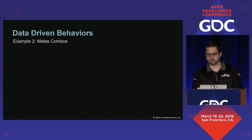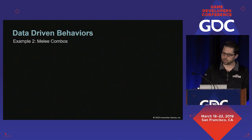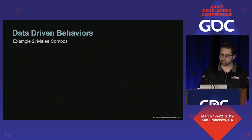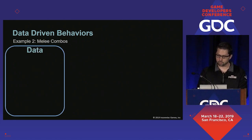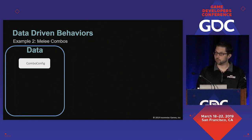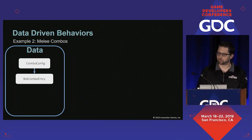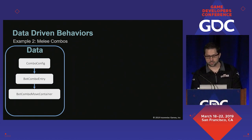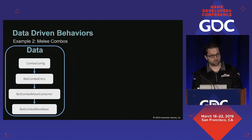So let me talk about a place where things can get squirrely. Melee combat in Marvel's Spider-Man is data driven, and I want to first give you an overview of the architecture of this system. At the top level, each bot has a combo config. That combo config contains a list of combo entries. Each combo entry contains one or more combo move containers, and each of these contains a single combo move base — this is the polymorphic data. All of this data is owned by a component called bot combos.